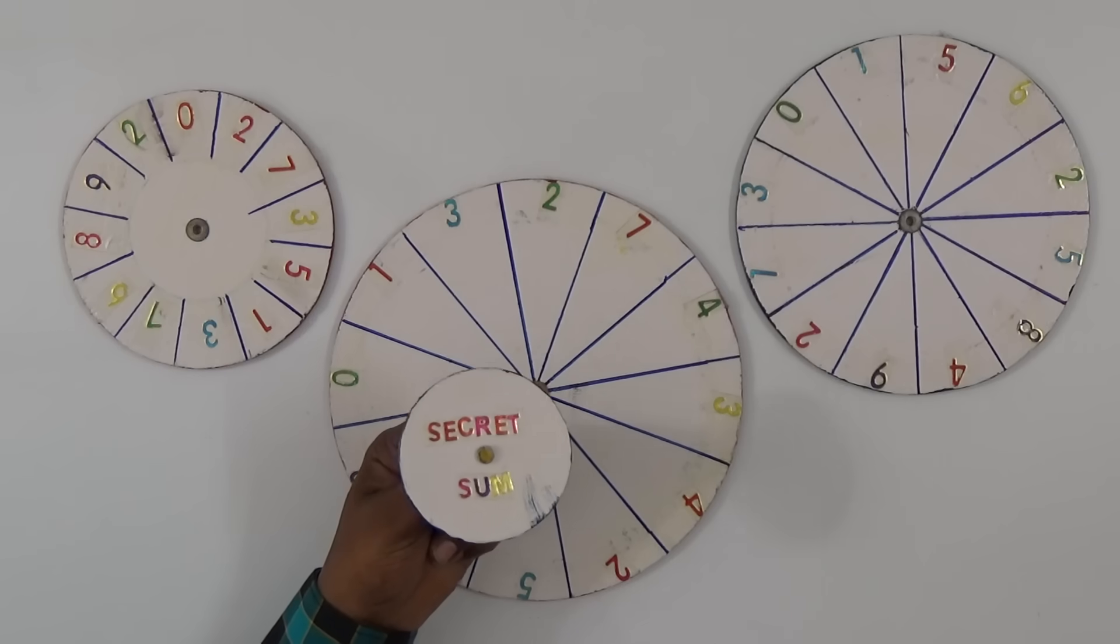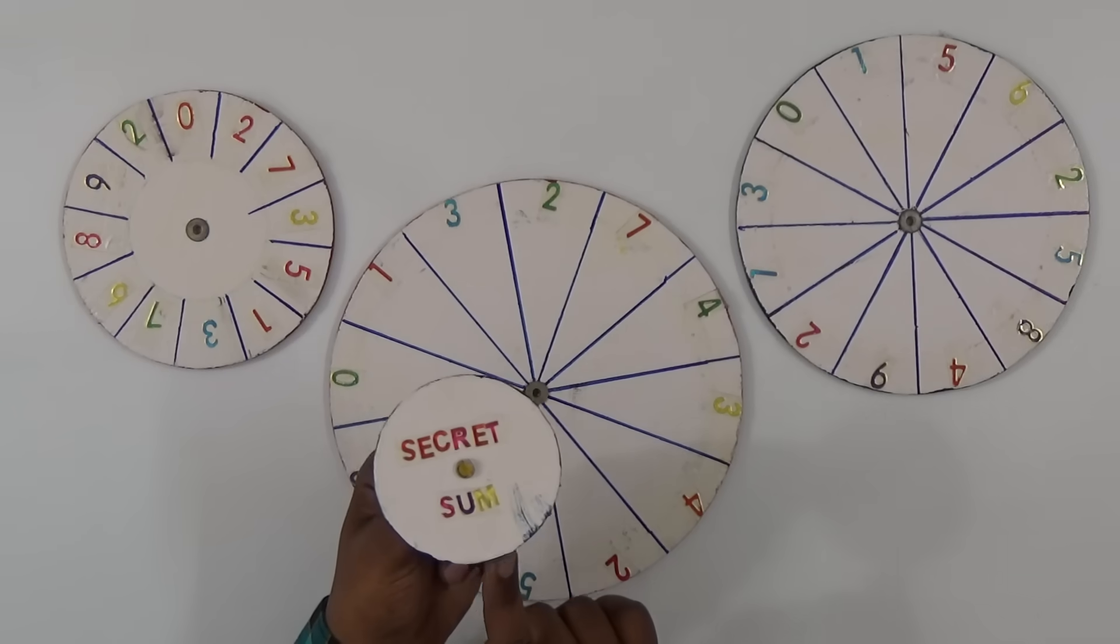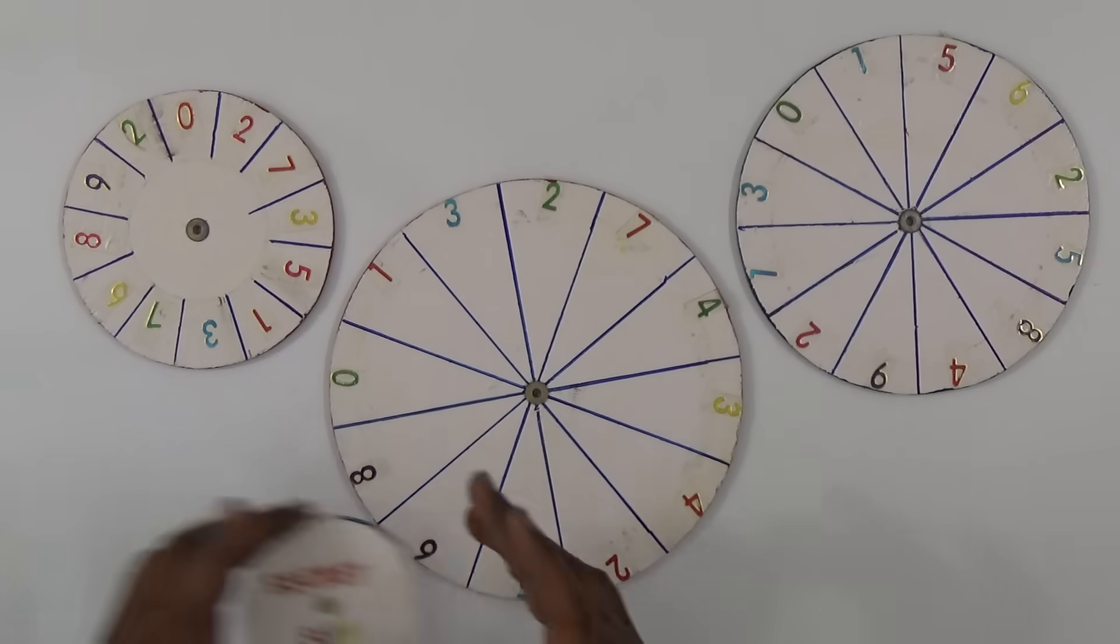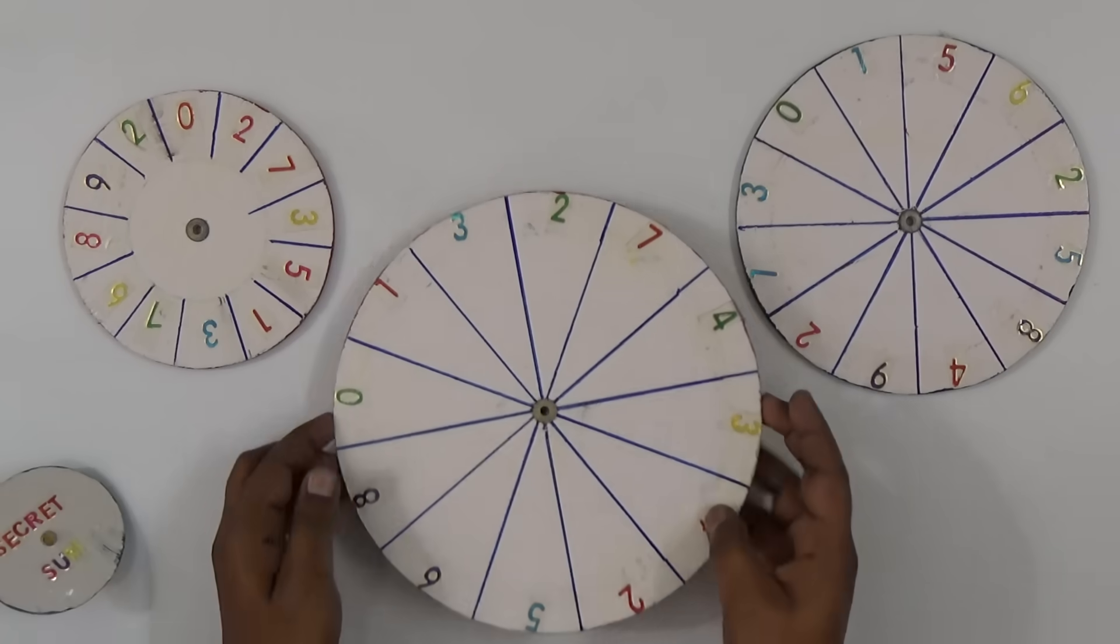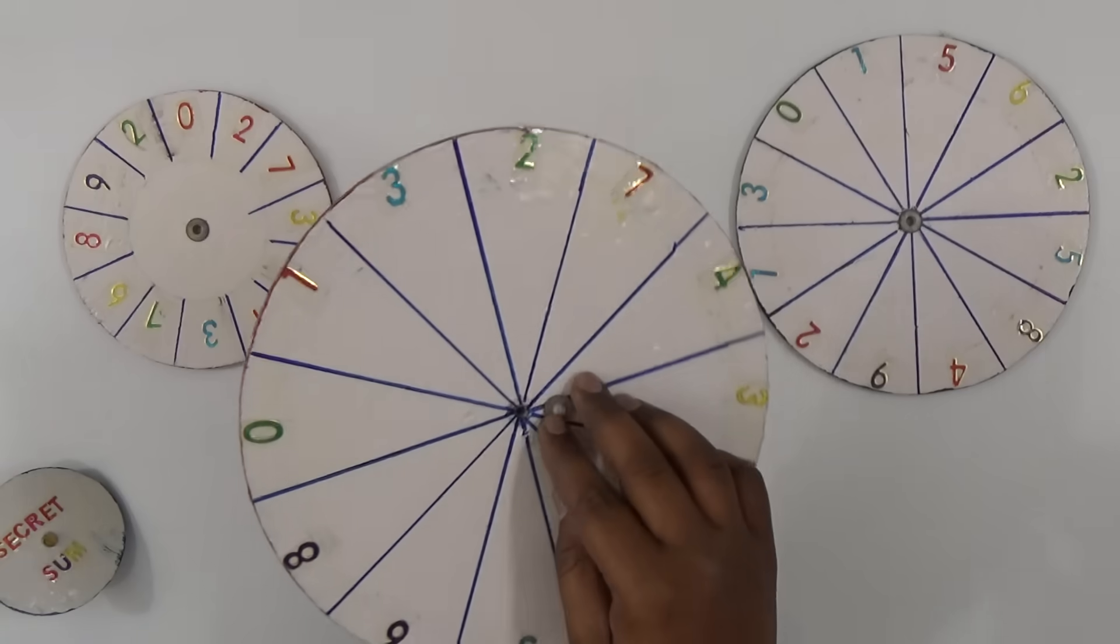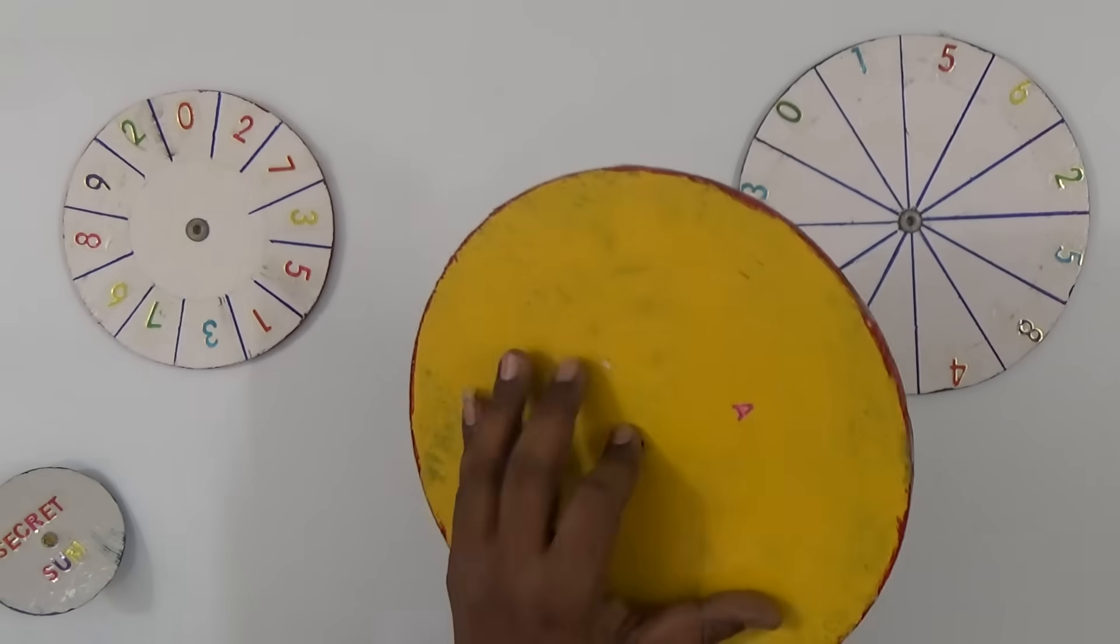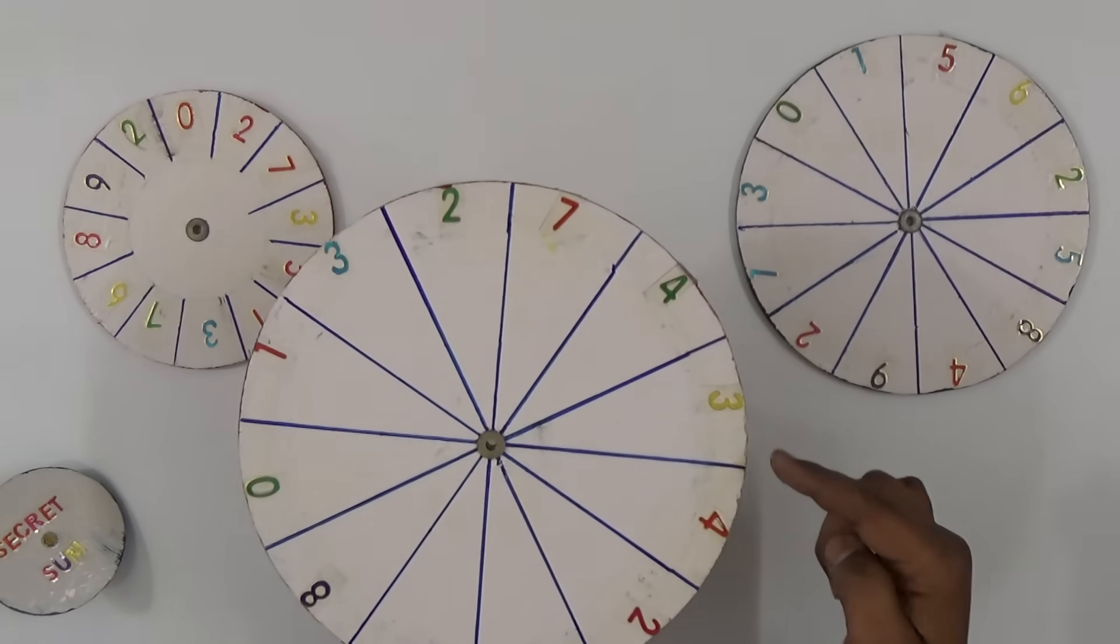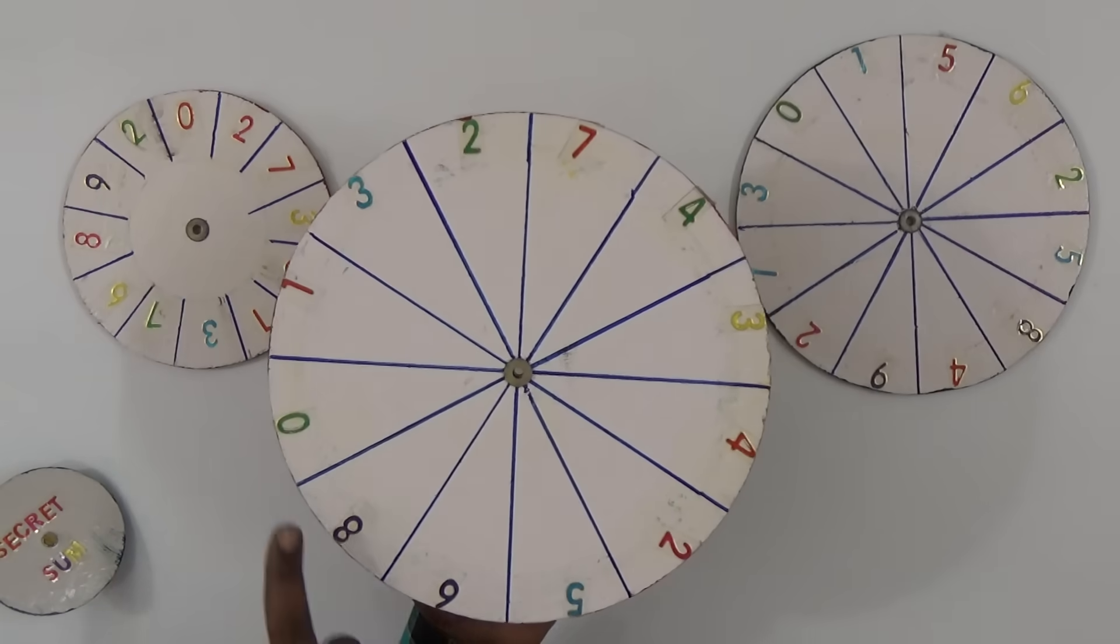This is a secret sum project you can use as a puzzle. Now see how to make this. Take one circular plywood and arrange the numbers in this way. You can use some screws. First one I kept two, seven, four, three, four, two, five, six, eight, zero, one, three in the circle.